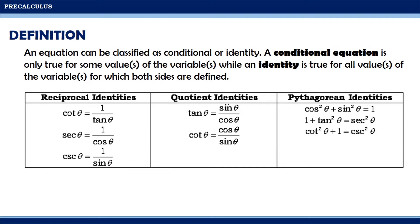For the quotient identities, we have: tangent theta equals sine theta over cosine theta, and cotangent theta equals cosine theta over sine theta. For the Pythagorean identities, we have: cosine squared theta plus sine squared theta equals 1, 1 plus tangent squared theta equals secant squared theta, and cotangent squared theta plus 1 equals cosecant squared theta.